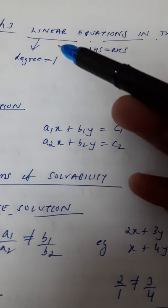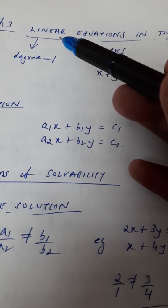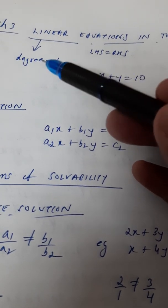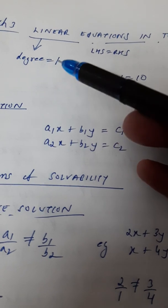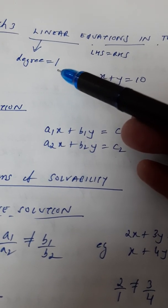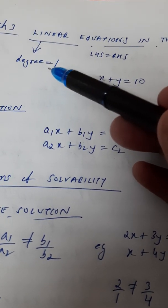Now, if you look at the first word, linear, the word linear means having degree 1. We did linear polynomials, right? So, the degree of that polynomial was 1.